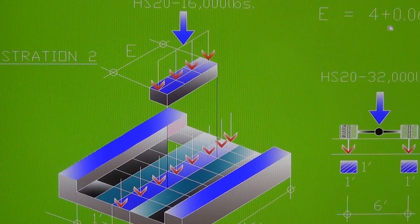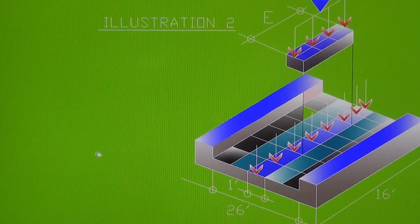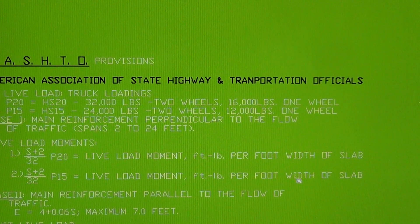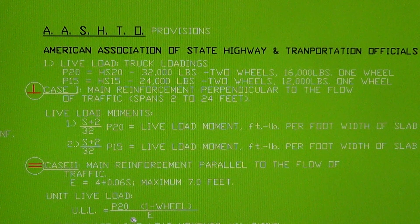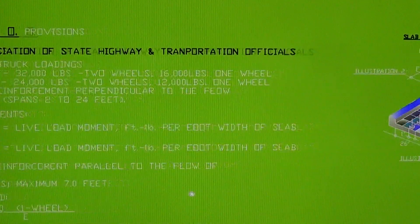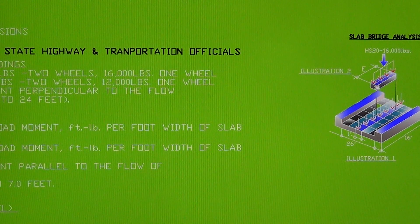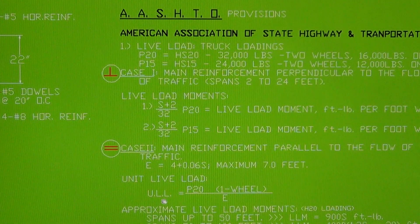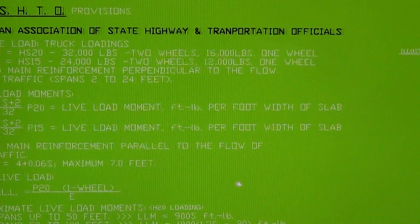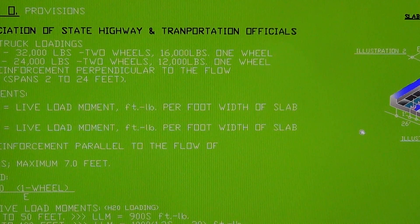The formula for E is: 4 plus 0.06 times S. We need E in order to solve for the unit live load. E is approximated from the actual analyzed length of 16 feet — that's why S equals 16 here. Once you calculate E, it becomes the denominator to get the unit live load. After you get the unit live load, that load is a uniformly distributed load applied over the one-foot strip of the slab.